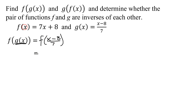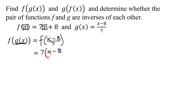So up in our definition of f of x, remember, x is just a placeholder. And all I have to do is replace every x in the definition of f with x minus 8 over 7. So I'm going to get 7 times — instead of x, I'm going to put x minus 8, all divided by 7 — and then don't forget your plus 8.